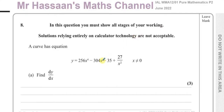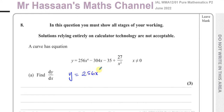This question is about a curve with the equation y equals 256x to the power 4 minus 304x minus 35 plus 27 over x squared, where x cannot be 0. We've got to find dy/dx. First of all, what we need to do is get this ready to be differentiated. All the x terms are already in index form and in the numerator.